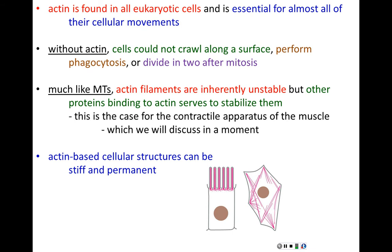Microvilli are also involved in sensation in some cases, like in the olfactory cells — the cells that allow us to smell. These microvilli assume this shape because of an actin underlying scaffolding underneath the cell membrane, and those are permanent structures. In addition, actin is a member of the cytoskeleton, so there are actin filaments woven through the entire cytoskeleton, and those actins are also permanent.